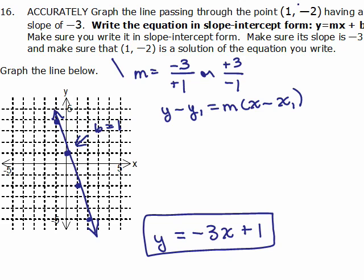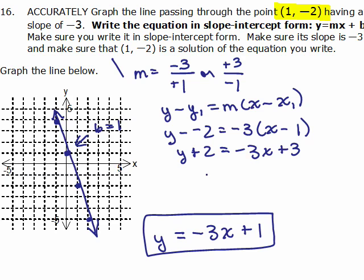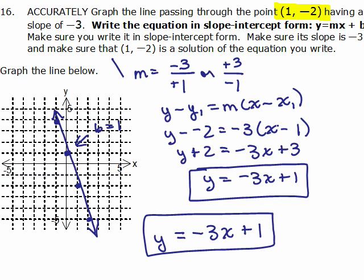And if you plug in this ordered pair, putting in 1 for x and negative 2 for y, it is a true equation. So that does work. But the other way to do it, instead of visualizing it, is plugging in the numbers. The y when you're plugging in negative 2, the slope you're plugging in negative 3 and for x1 you're plugging in 1 and you should get the same answer doing it this way, negative 3x plus 3 and then subtract 1 from both sides, you get negative 3x plus 1. So we get the right equation either by looking at the picture or by using the slope point formula.